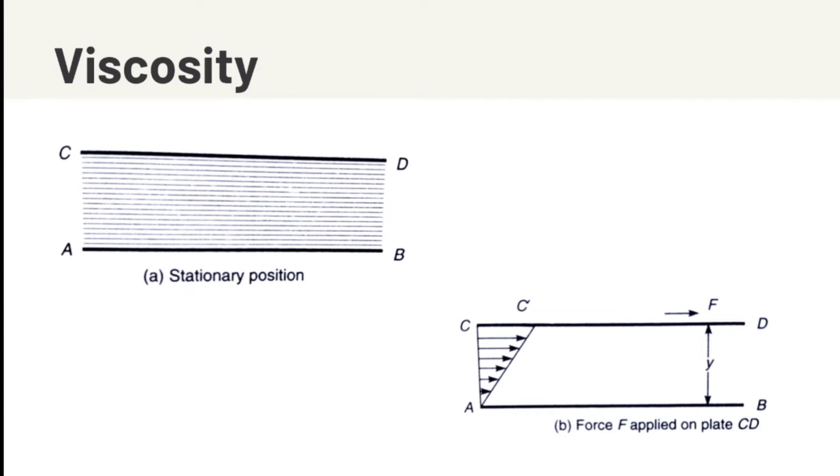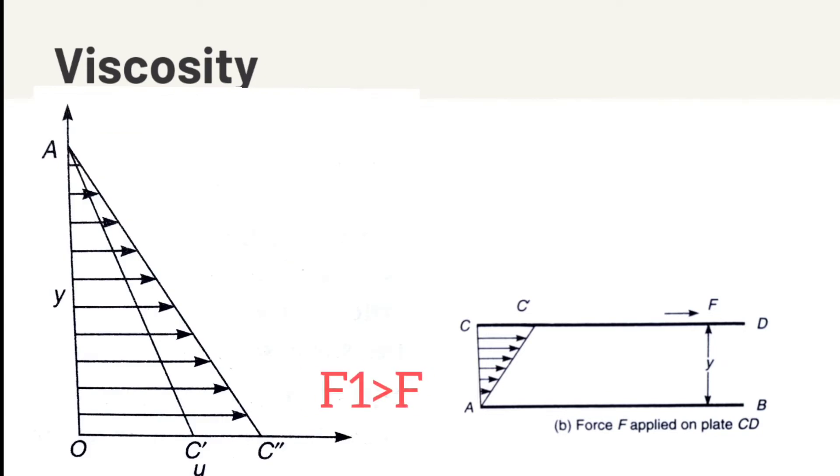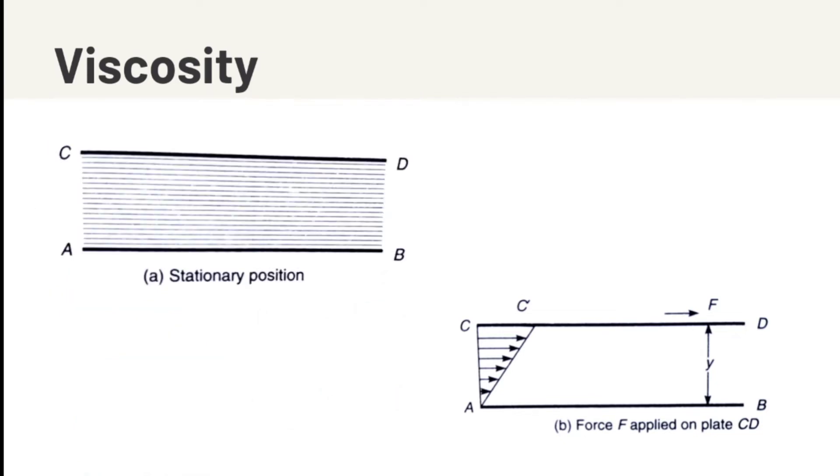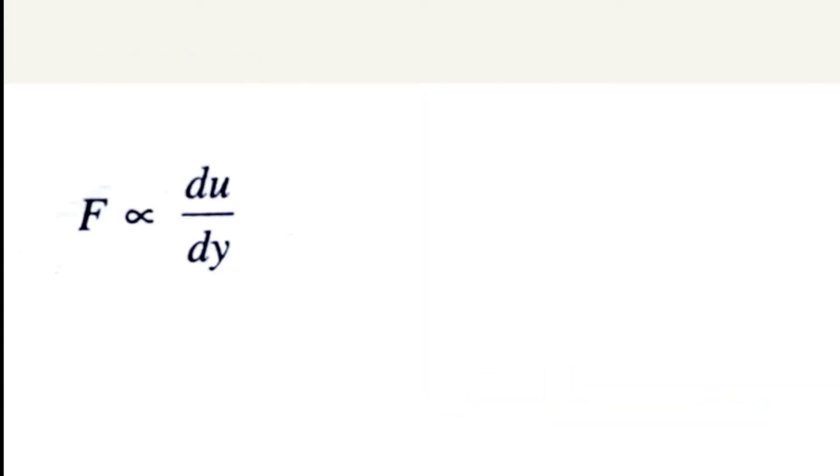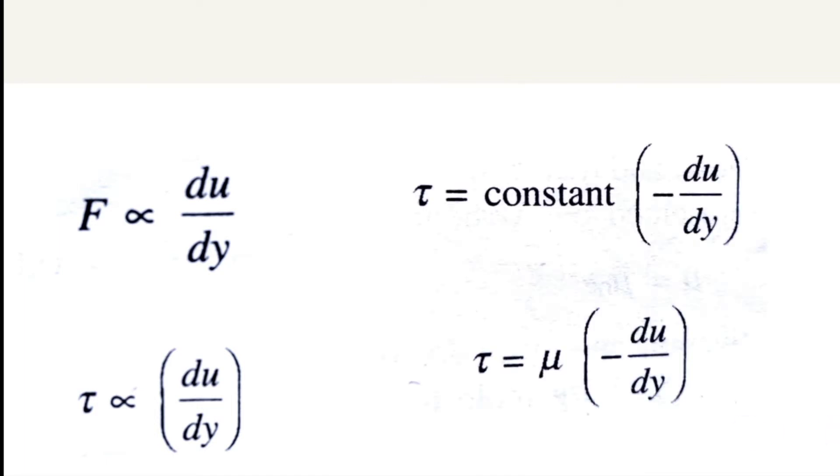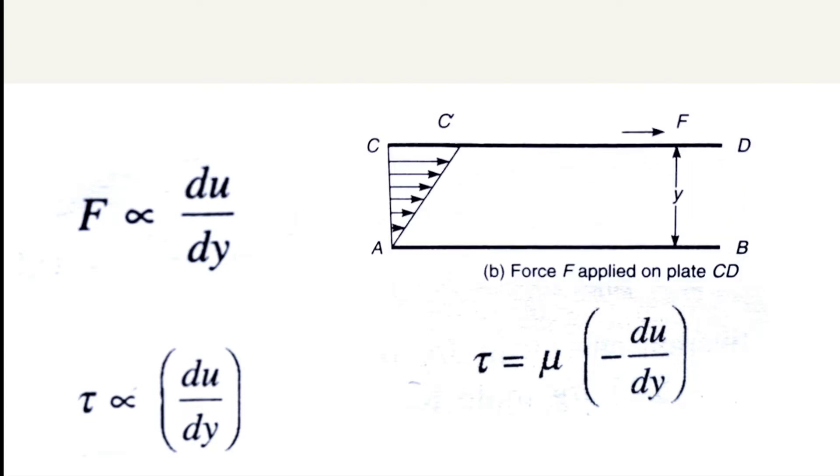If the force F applied to the plate CD is more, it would move the layers faster creating a different velocity gradient AC double dash. Thus, more is F, more is the velocity gradient. In other words, we can say that dU/dY is proportional to F. Pressure acting on plate CD, we call the pressure as stress or more systematically shear stress tau. The velocity gradient dU/dY is also known as strain created in the body of fluid. This strain is known as shear strain or shear rate. If proportionality is removed, we can write as tau equals mu times dU/dY. Mu is the coefficient of viscosity. The negative sign indicates that as the distance Y increases, the velocity U decreases.